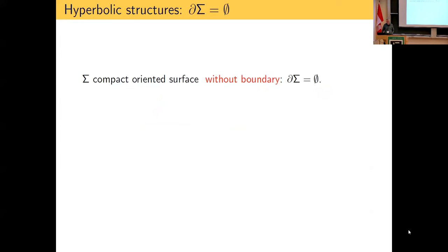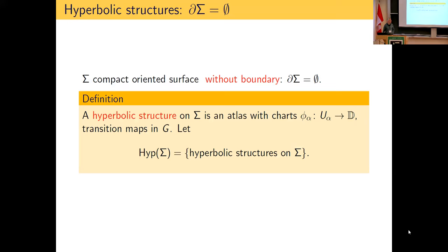Now I can tell you what a hyperbolic structure on a surface is. Let's first do the case where the boundary is empty: a compact oriented surface without boundary. A hyperbolic structure is simply given by an atlas whose charts take values in the Poincaré disk, and whose transition functions are elements of G — isometries of the Poincaré disk, i.e., elements of PSL(2,ℝ) — so transition functions are constant. We denote by Hyp(Σ) the space of all hyperbolic structures.